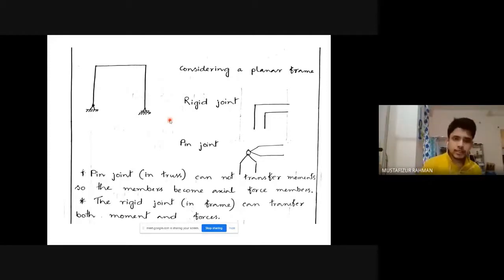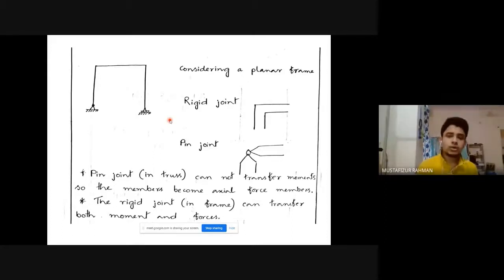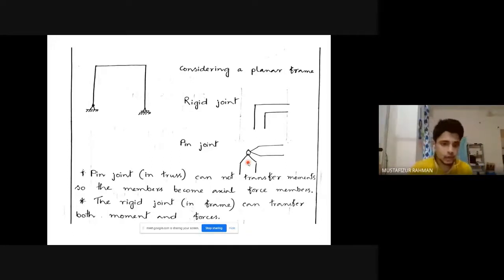Theoretically, at a rigid joint there will be no displacement and no rotation. But in reality we do not get a perfectly rigid joint — we get a near-rigid or semi-rigid joint. In a truss system, the pin joint is not capable of transferring moment; it can only transfer axial forces. That is why in a truss system we do not see moment — the joints are pin joints, not capable of generating or transferring moment.